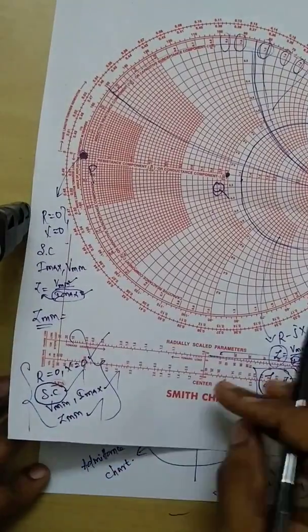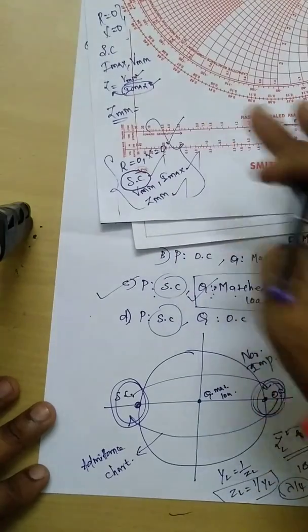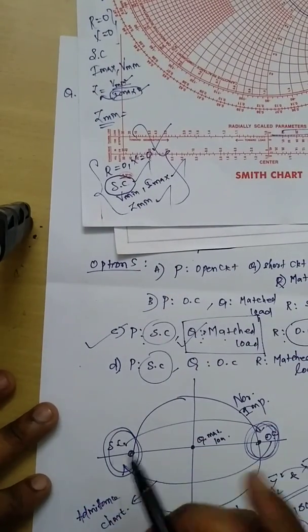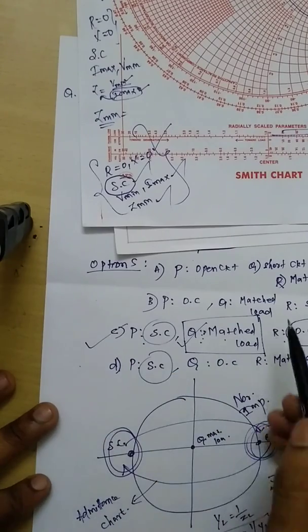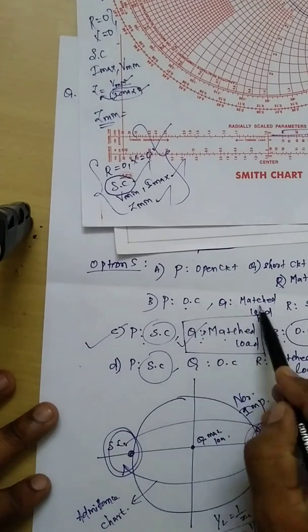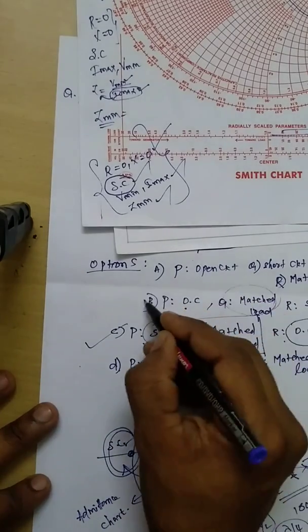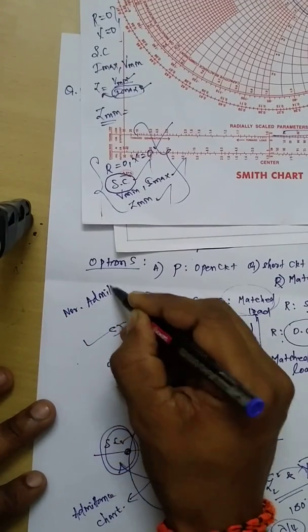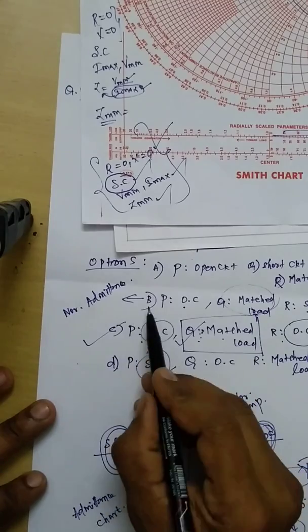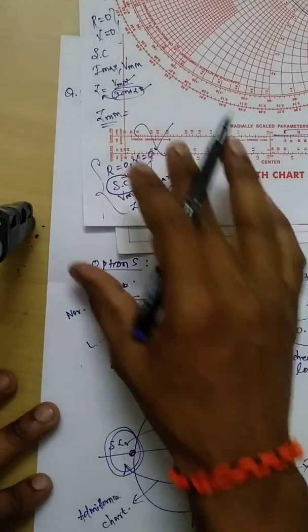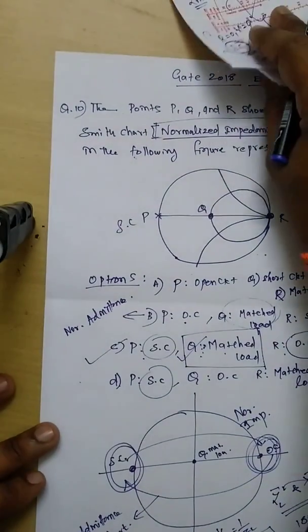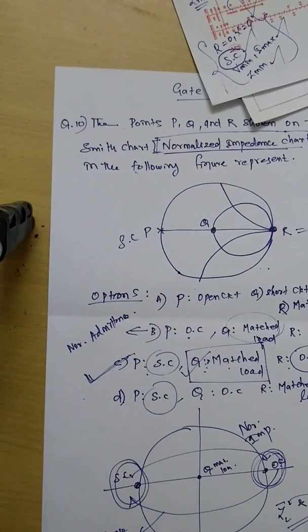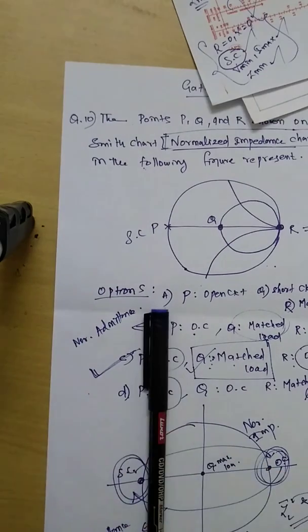If it were a normalized admittance chart, the short circuit would be on the right and open circuit on the left, so option B would be the right answer. But since this problem uses a normalized impedance chart, option C is the correct answer. Thank you.